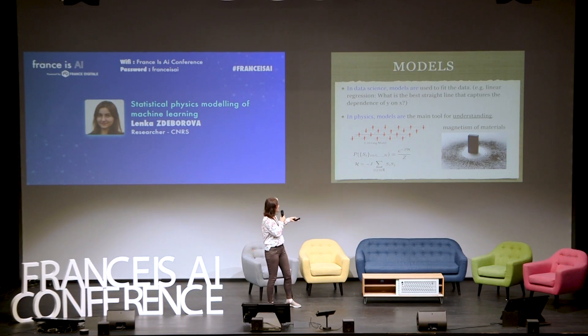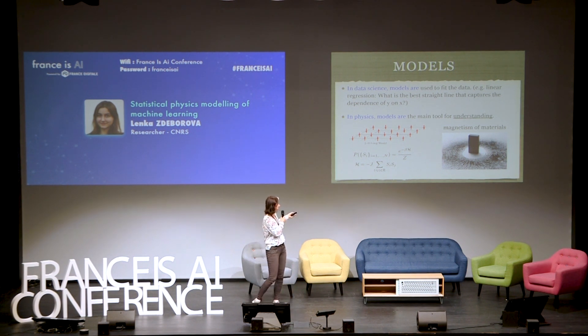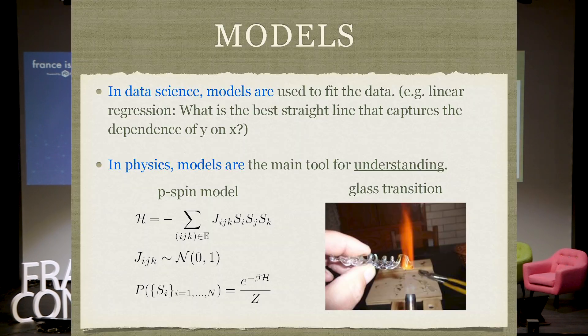For instance, the model used to understand how magnetism works would be summarized by a Hamiltonian and a probability measure, which we call the Boltzmann measure. Or the model used to understand how glassy materials work would be another Hamiltonian of a different nature. And there are analogous models to understand the universe and particle physics and all that.